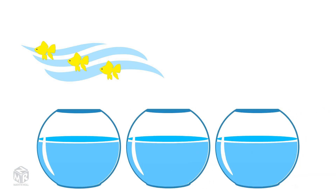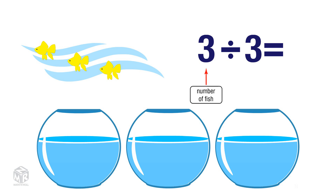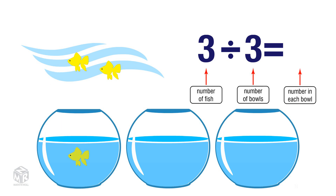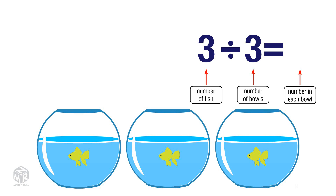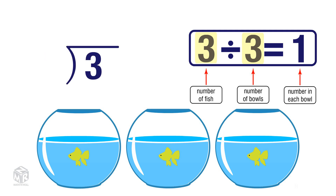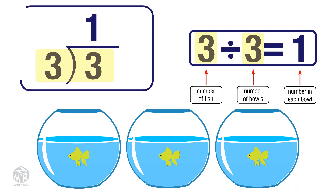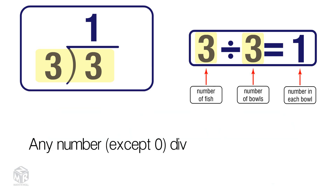Let's say we have three fish and we want to put them into three different bowls. The first three represents how many fish we have; the second three represents the number of bowls. 3 divided by 3 gives us the number of fish in each bowl — we have one fish in each bowl, so 3 divided by 3 equals 1. The second rule says any number, except 0, divided by itself equals 1.